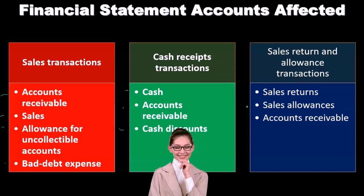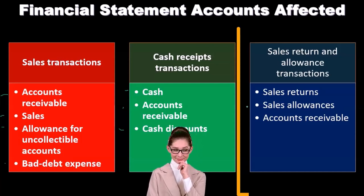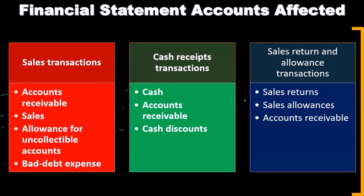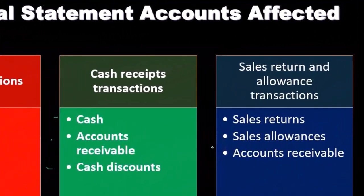Sales returns and allowances act kind of like expenses, but they're really contra sales accounts. If a customer returns inventory, the sale never really happened — it's a reversal. Rather than decreasing the sales account directly, we use contra sales accounts that carry debit balances. These are contra revenue accounts — sales returns and allowances — and of course accounts receivable is also involved with sales returns.